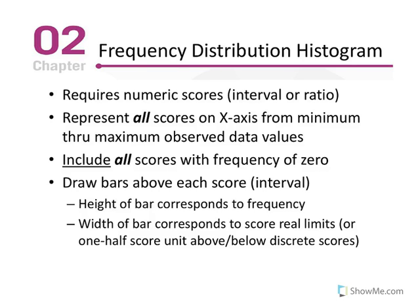Frequency distribution histogram. A histogram is a bar graph. It requires numeric scores, so of the four scales of measurement, nominal, ordinal, interval, and ratio, interval and ratio are the only ones that are numeric, meaning that they can be quantified. And therefore, we would not use a histogram for nominal or ordinal data.